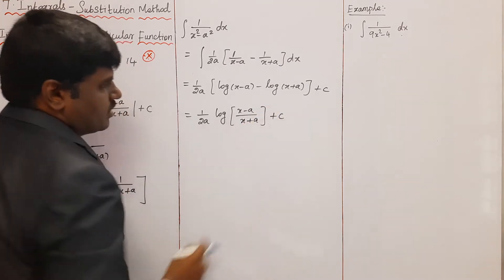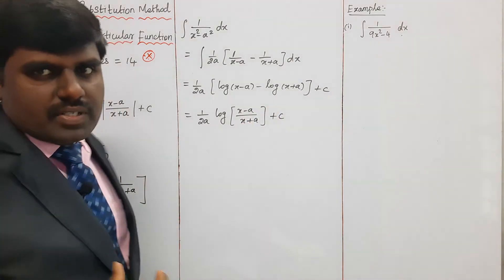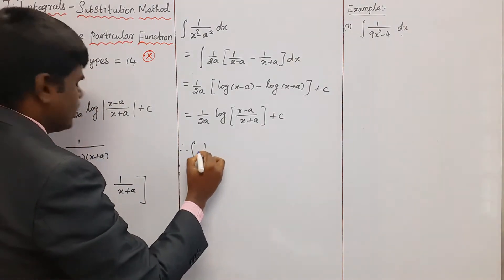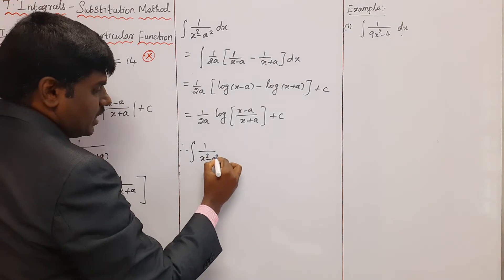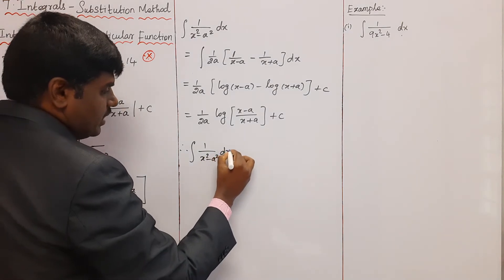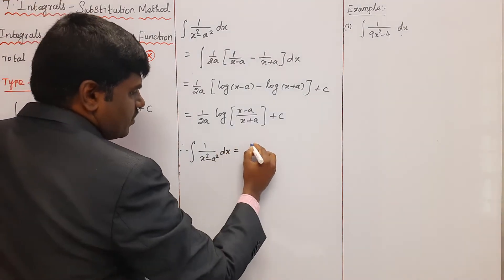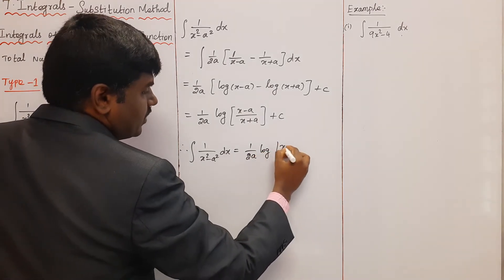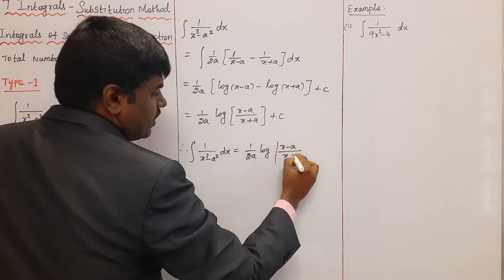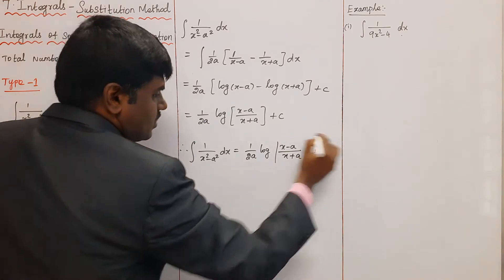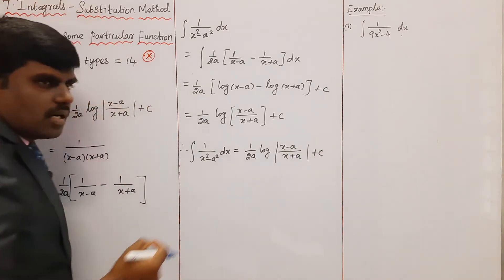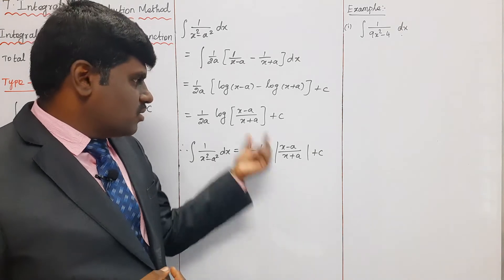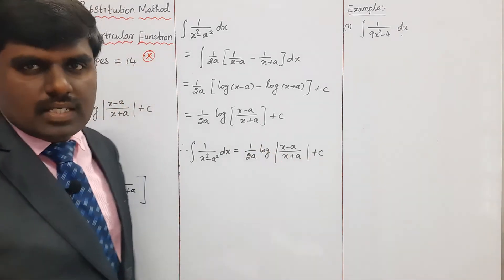Since a logarithmic function cannot be defined for negative values, we use the modulus. Therefore, the integration of 1/(x² - a²) dx equals (1/2a) log|(x - a)/(x + a)| + C.